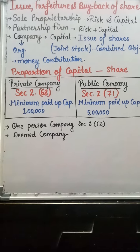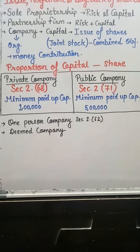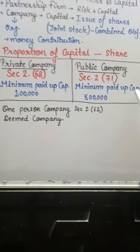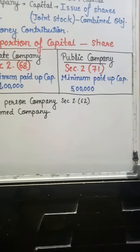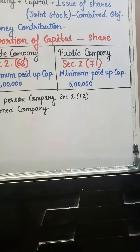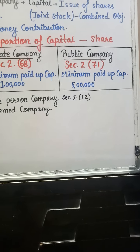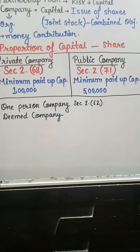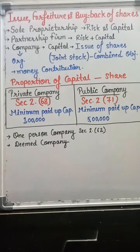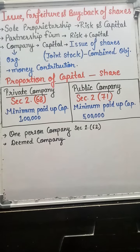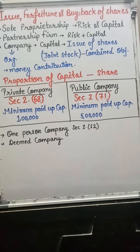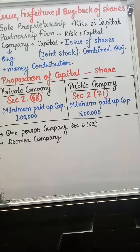Coming to public company — as mentioned on the board, its minimum paid-up capital is rupees 5 lakh, and it can be more than that. The first condition for a public company is: if a company is not a private company, that means it is automatically a public company.